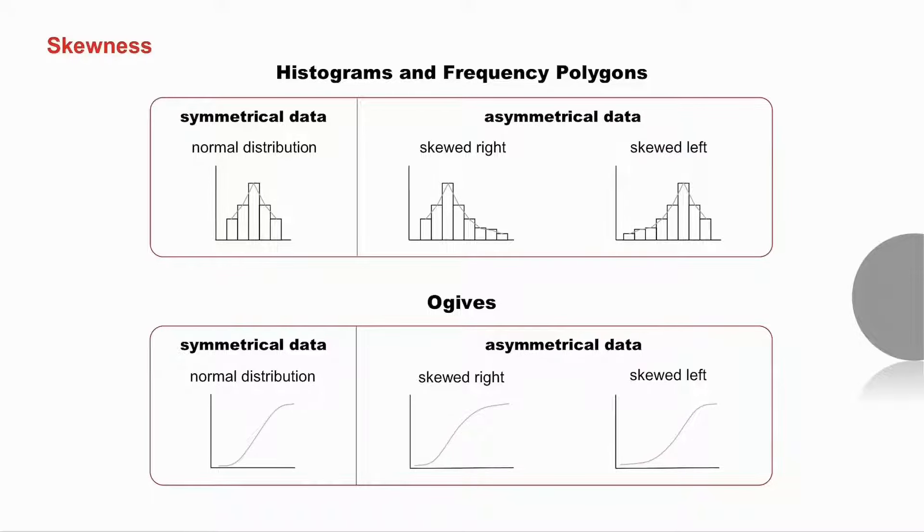In the ogive, if you go up quickly in the beginning and then slow down, it's skewed to the right. If you go up slowly in the beginning and then speed up, it's skewed to the left.